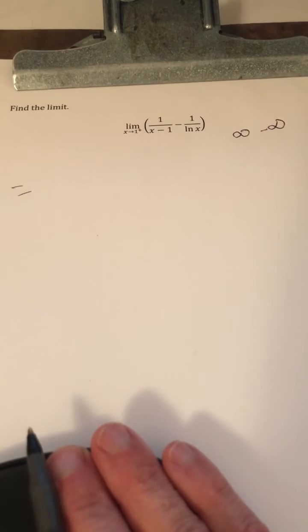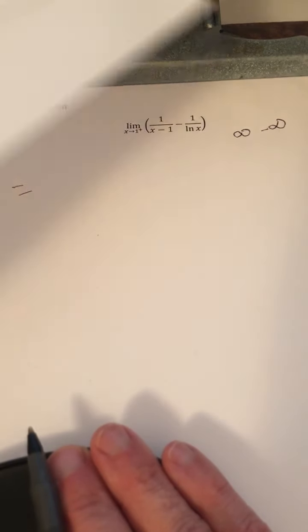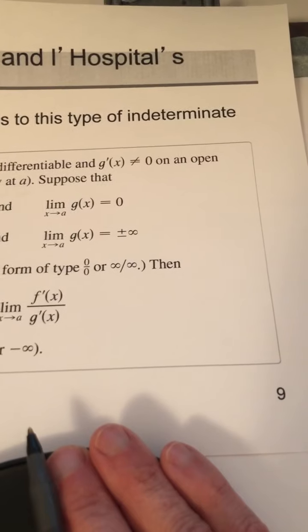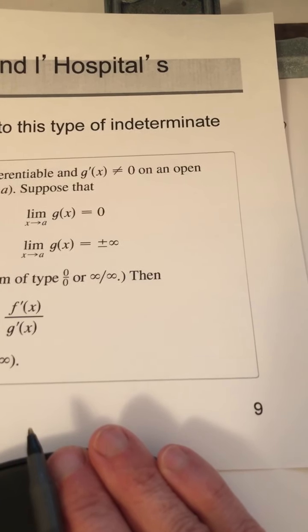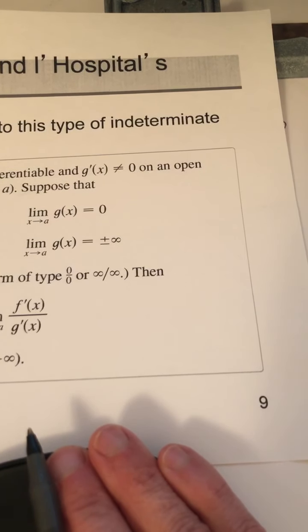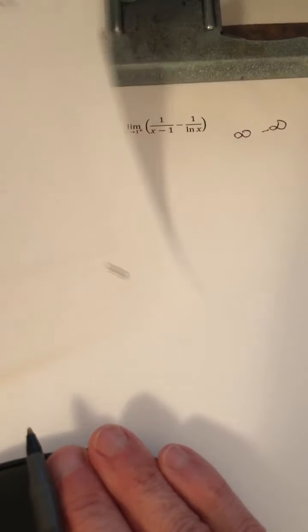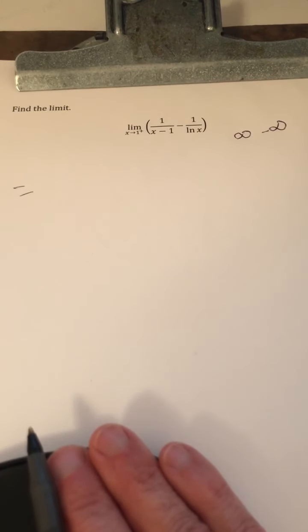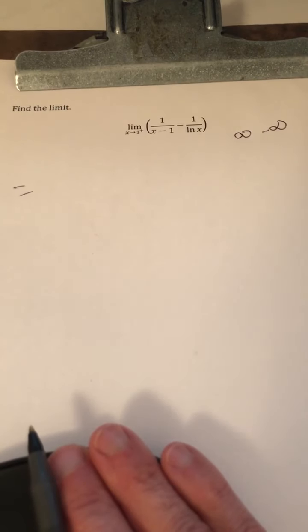What you want to keep in mind is that L'Hopital's rule addresses either a 0 over 0 situation or an infinity over infinity situation. So if we have an indeterminate difference or an indeterminate product or indeterminate power, we have to somehow rewrite it as a fraction. So we have to write this as a quotient somehow.